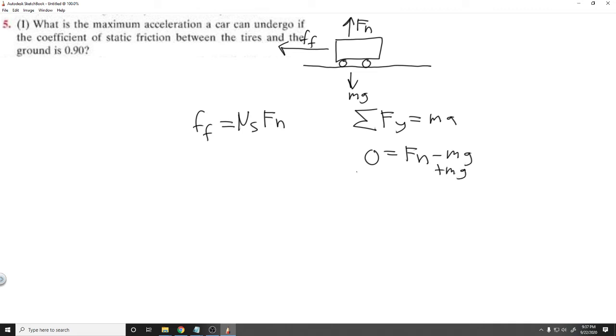And then if I add mg to both sides, fn or the normal force equals m times g. So what we can do is replace f sub n with mg, and it's going to help us solve.